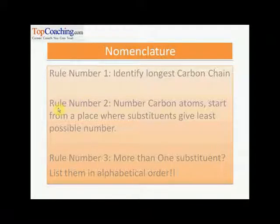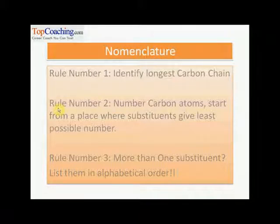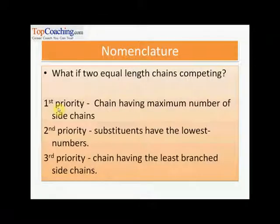Let us now try giving names to these haloalkanes according to IUPAC rules. Rule number one, as with all hydrocarbons, identify the longest carbon chain — the one with the maximum number of carbon atoms. Rule number two, number the carbon atoms starting from the end where substituents get the least possible number. Rule number three, if more than one substituent is present, list them in alphabetical order.